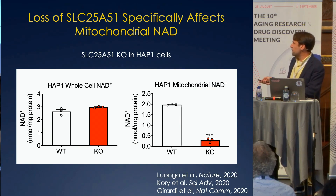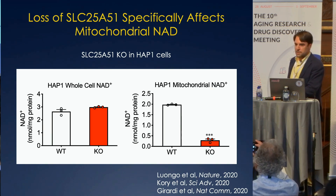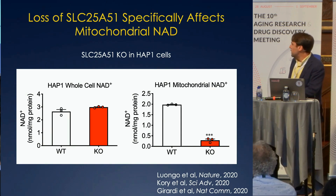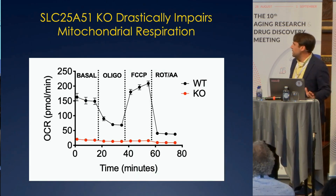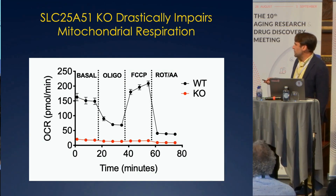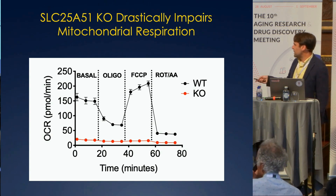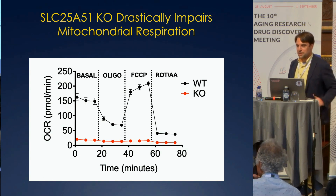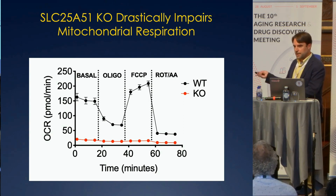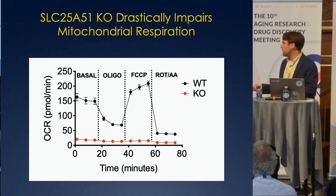This is just the proof-of-principle experiment with HAP1 cells, where whole cell NAD is completely unchanged by knocking out this gene. But if you isolate mitochondria from those cells, you can see the NAD is really at a very low level. As you might predict, if we look at oxygen consumption as a measure of mitochondrial function, it's near zero all the time. This is data from a Seahorse — oxygen consumption rates putting the cells through their paces with different inhibitors and activators of mitochondrial function. The knockout cells are just flat the whole time. They really can't respire at all, even though they are alive and continue to proliferate, powered completely by glycolysis.